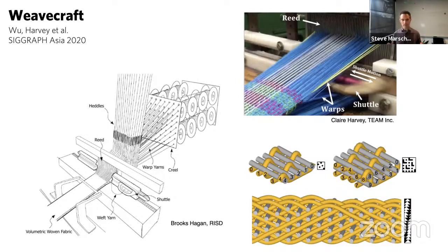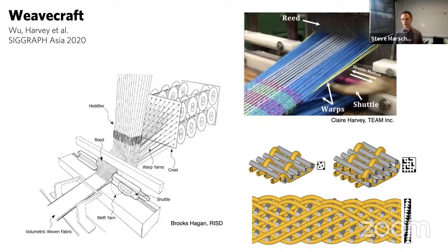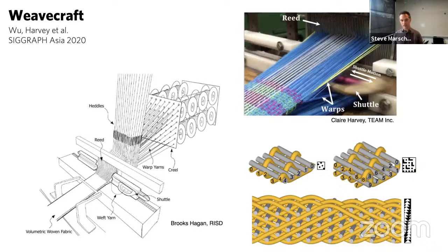Weaving starts with an array of parallel yarns called the warp, and you interlace yarns through it in a perpendicular direction called the weft. Most weaving treats the warp as a one-dimensional array of yarns. The difference in 3D weaving is that you have a two-dimensional array of warp yarns. This is a small change in equipment, but a big change to the design problem — you really have to switch how you think about yarn routing. It becomes a very three-dimensional problem.